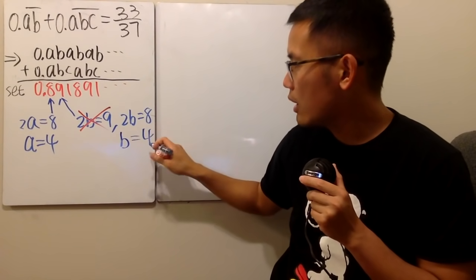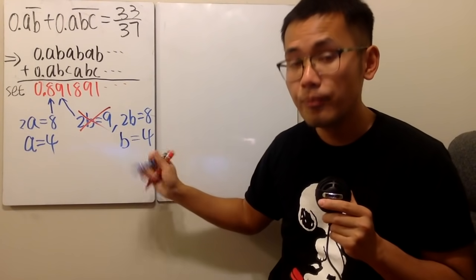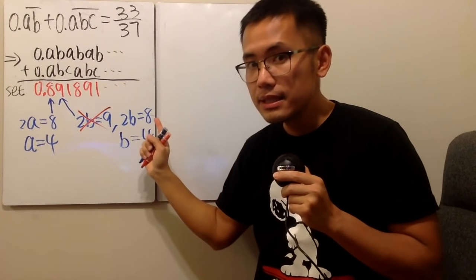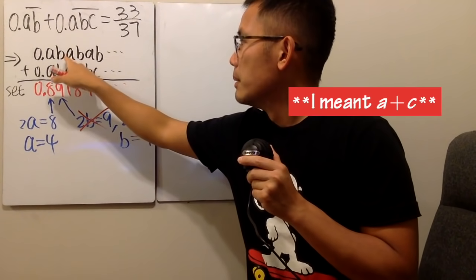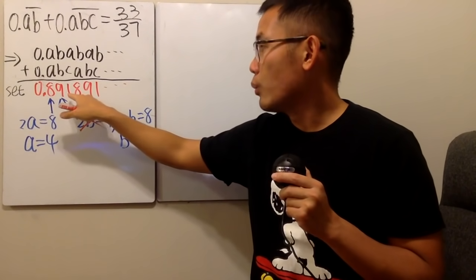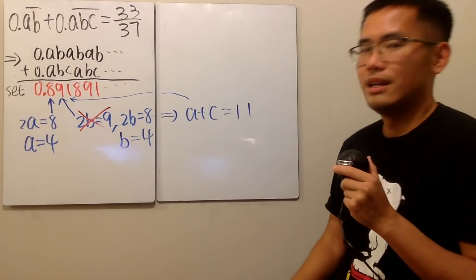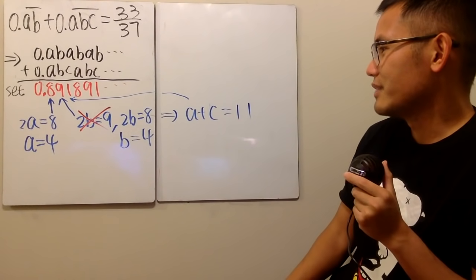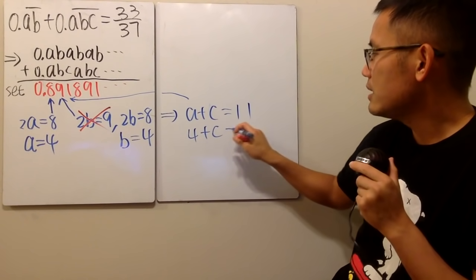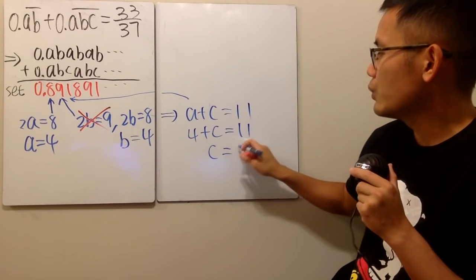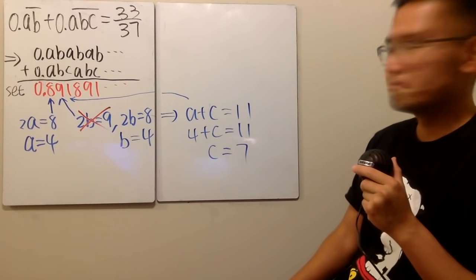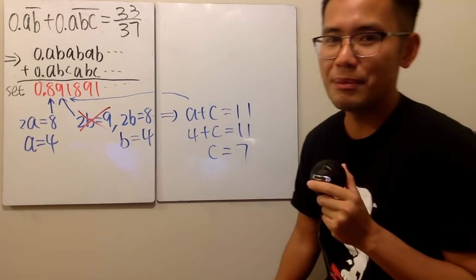With B equal to 4, we need B plus C to equal 11 — that is, 4 plus C equals 11, so C equals 7. So A=4, B=4, C=7. It's always a good habit to double-check the answer.